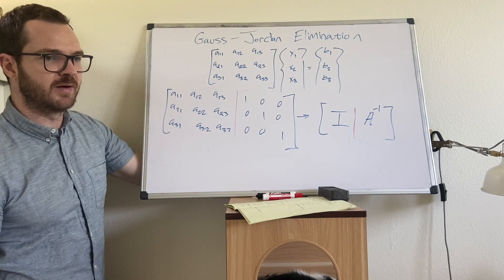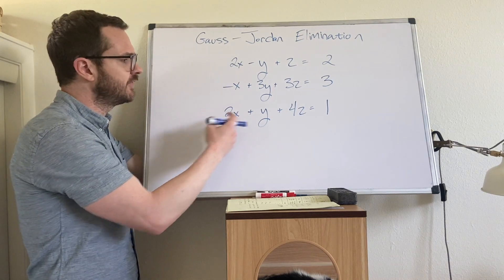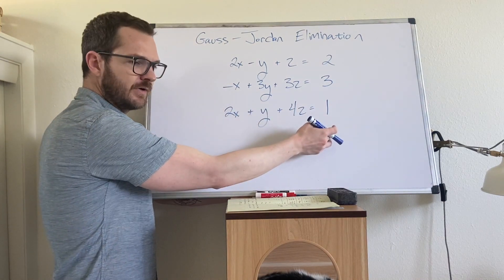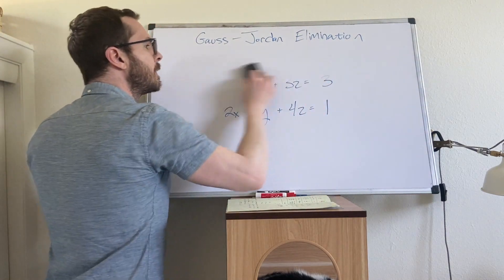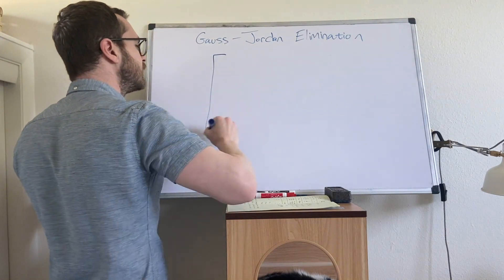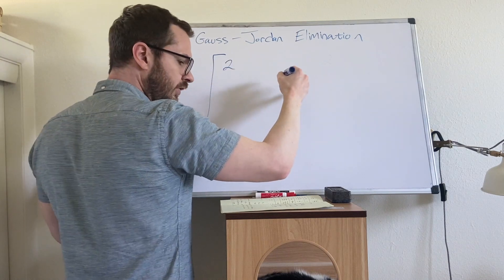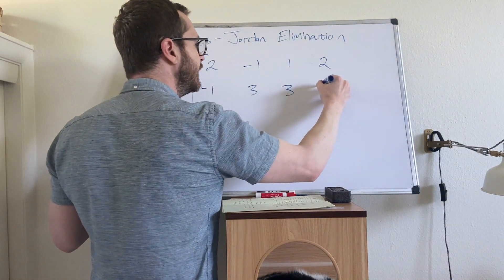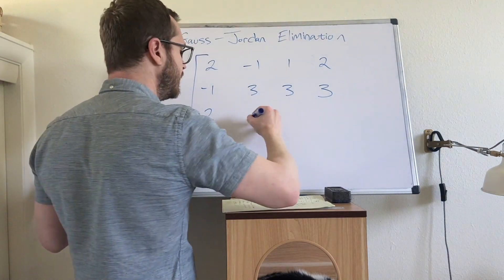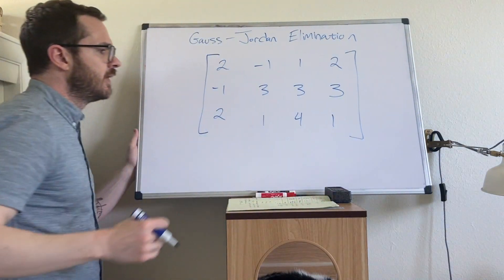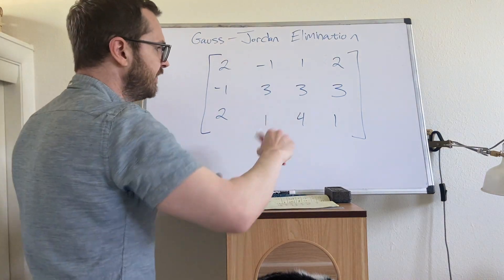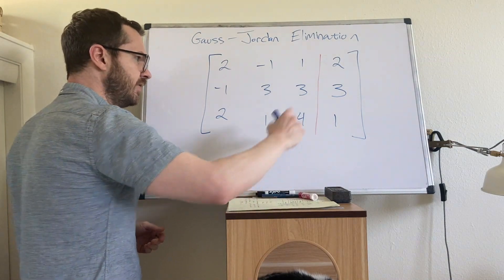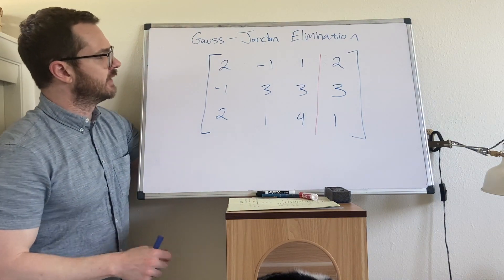Here's the worked example. Three-by-three system, three unknowns. Begin by forming the extended coefficient matrix: 2, -1, 1 | 2; -1, 3 | 3; 3, 2, 1 | 4; 1. The goal is to convert the left side to identity, leaving the solutions on the right.